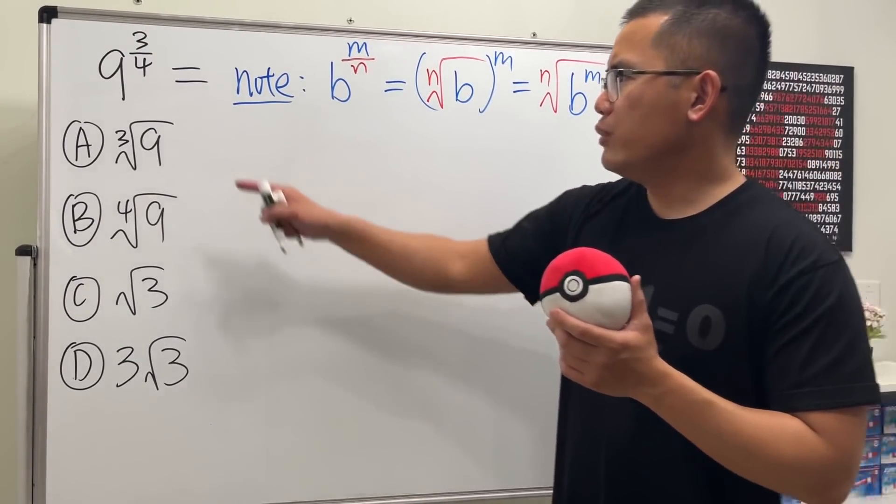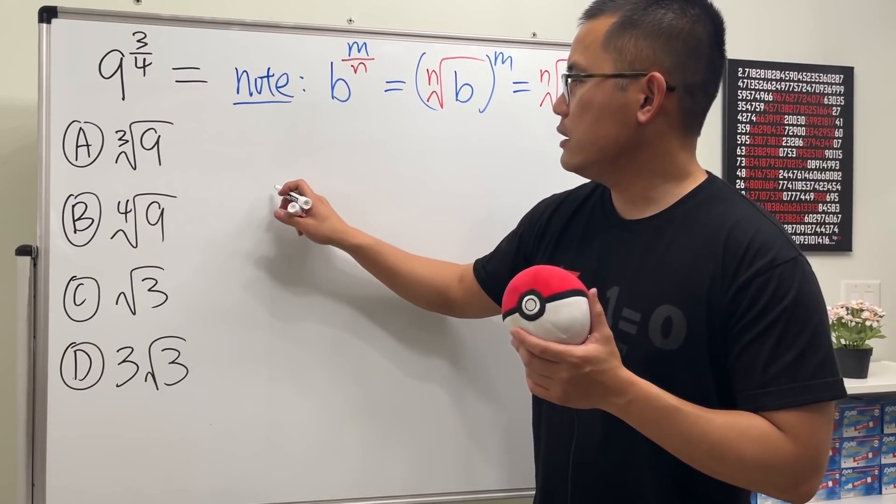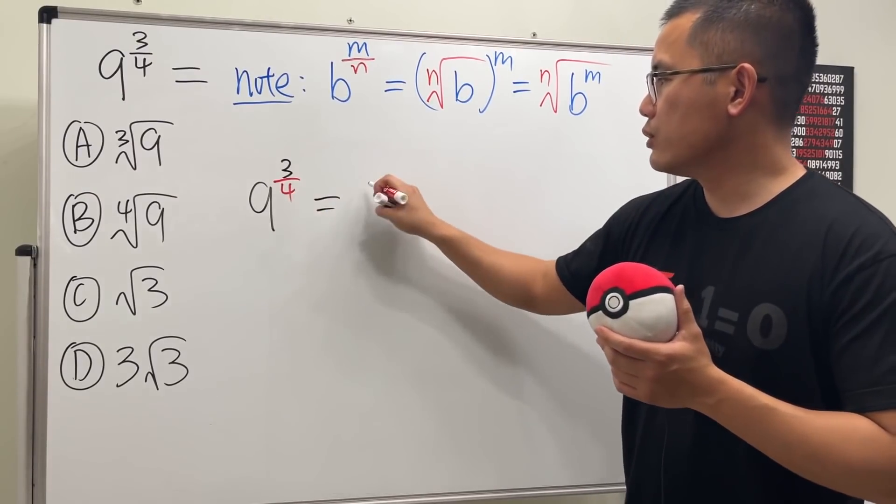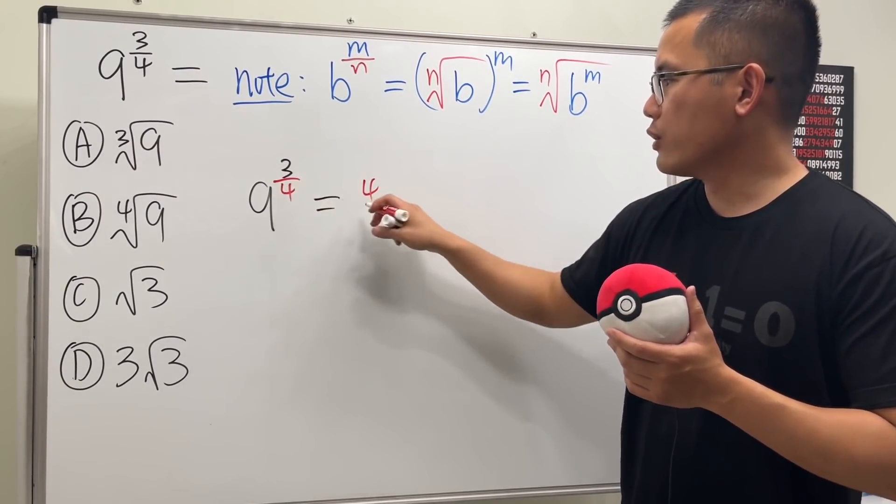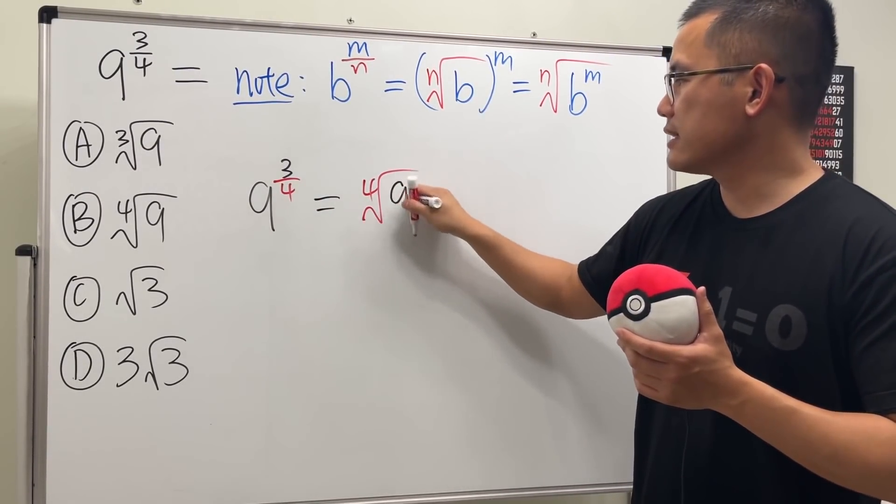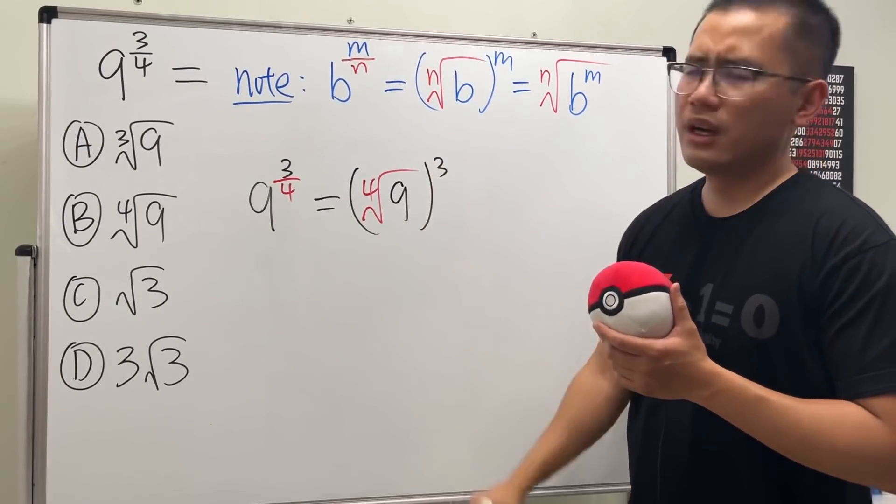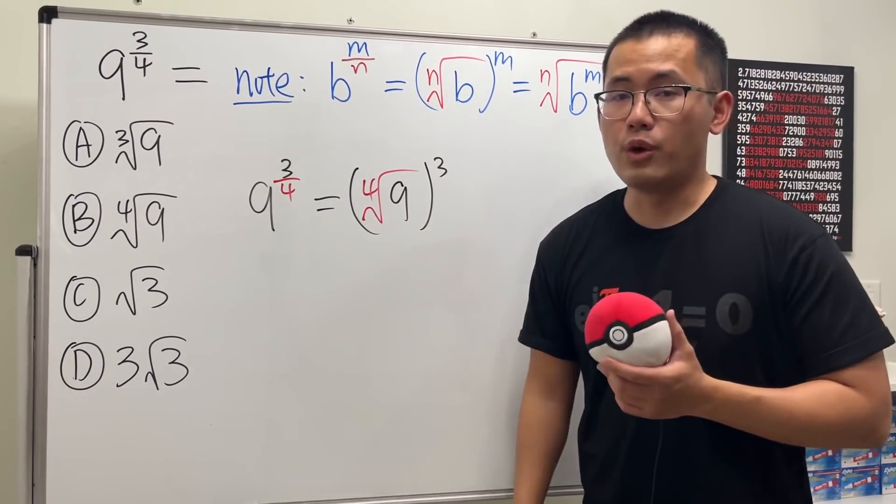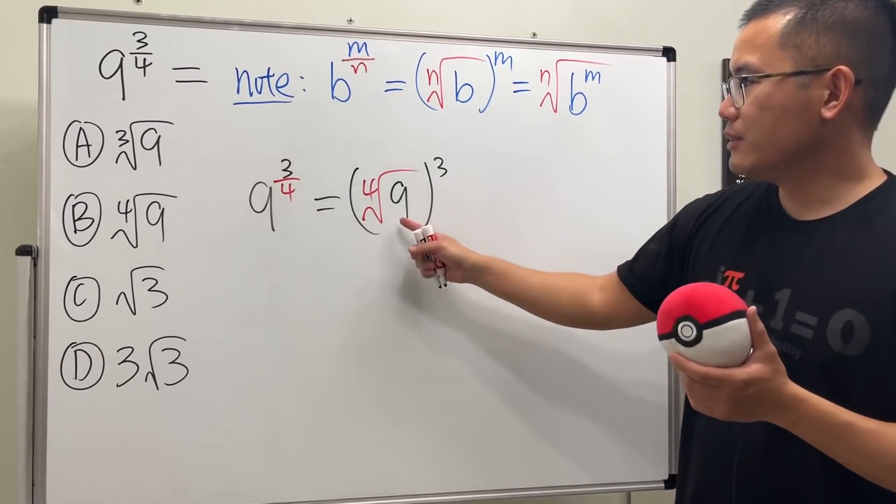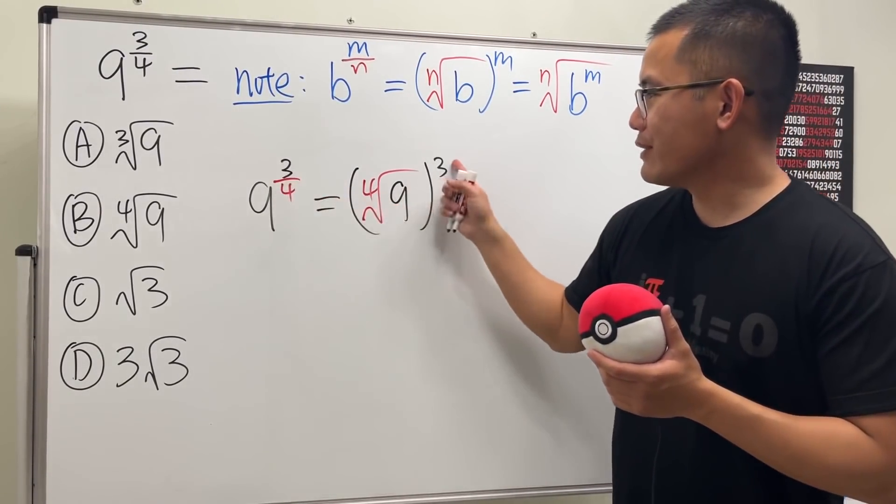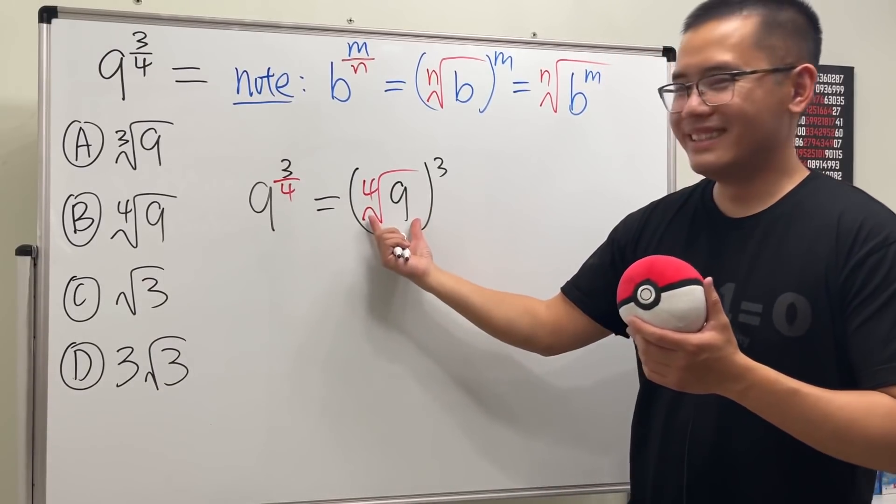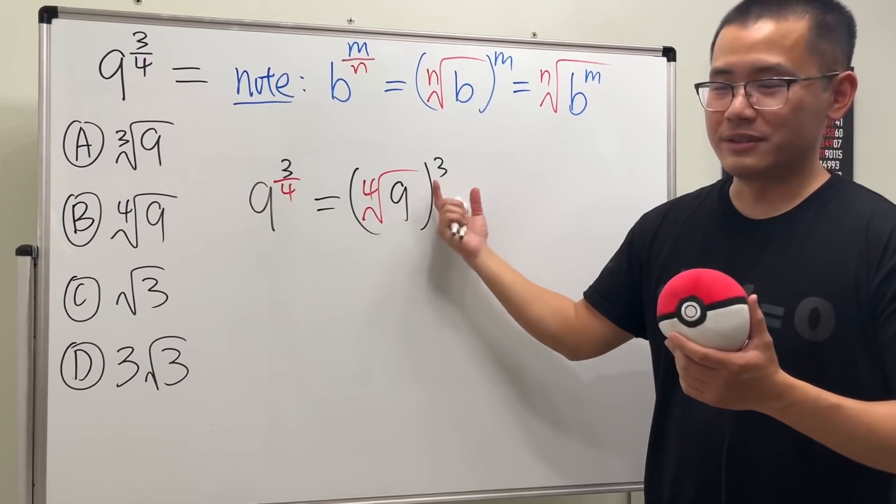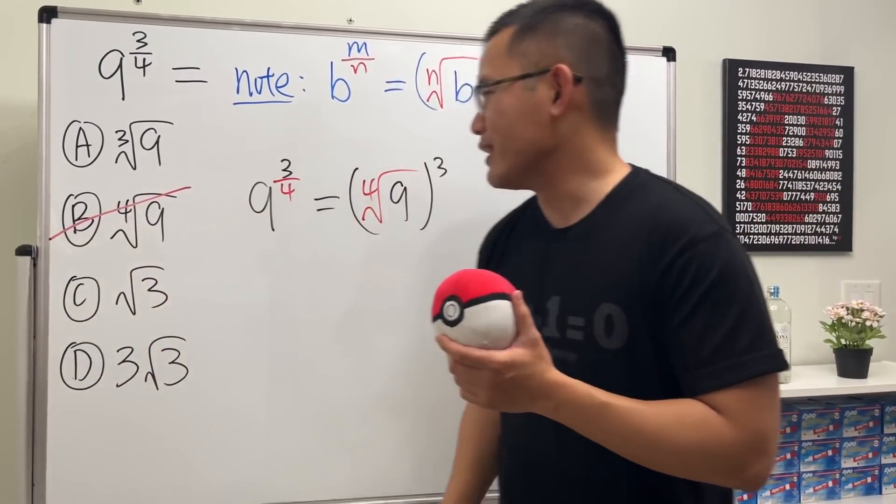All right, keep that in mind. But if you look at this right here, if you see nine to these three over fourth power, and if we change the fourth root, and then if we put the nine inside and then raise to the third power, you may be thinking that I'm lying, because what's the fourth root of nine? We don't know. And by the way, if we don't have the three, then you see the wrong answer here. B is not the answer because you still have to take this to a third root.